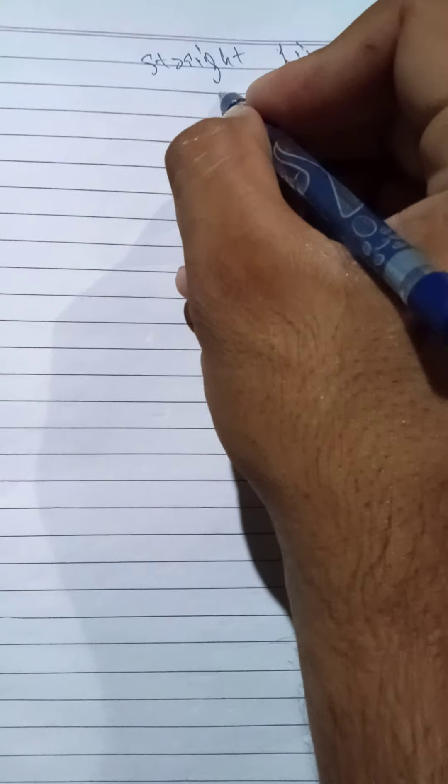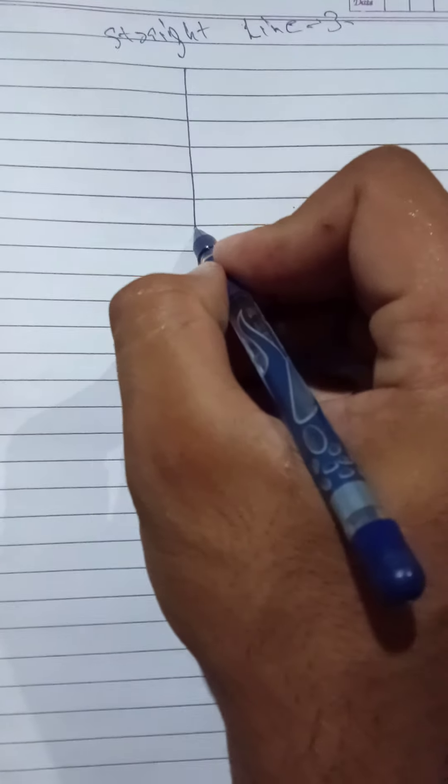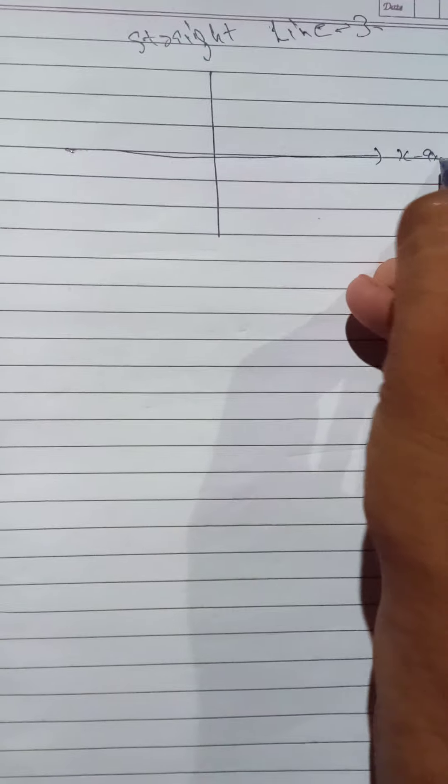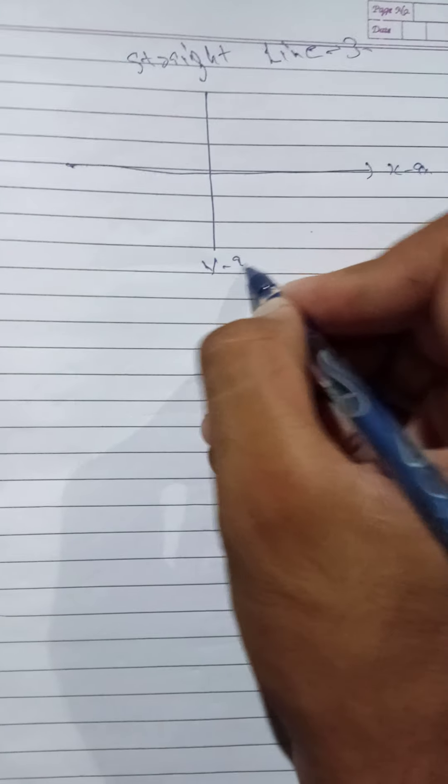Hello friends, this is straight line part 3. In the last part we discussed about the slope. As we know, the slope is the angle made by the line with the positive direction of x-axis. If we have a Cartesian plane, that is x-axis and this is y-axis.